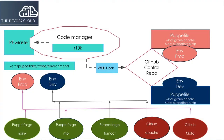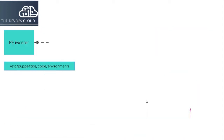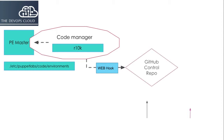Now let's look at the slide to understand how CodeManager and Puppetfile help manage different environments like prod and dev. First, you'll need to trigger CodeManager by hitting a web endpoint. You can do this either through a webhook or a custom script. Either way, you'll also need to set up authentication and create a custom URL. A webhook is the simplest way to trigger CodeManager.